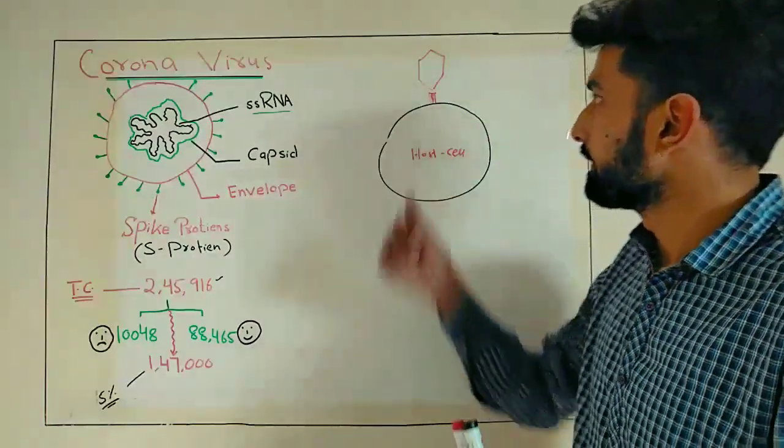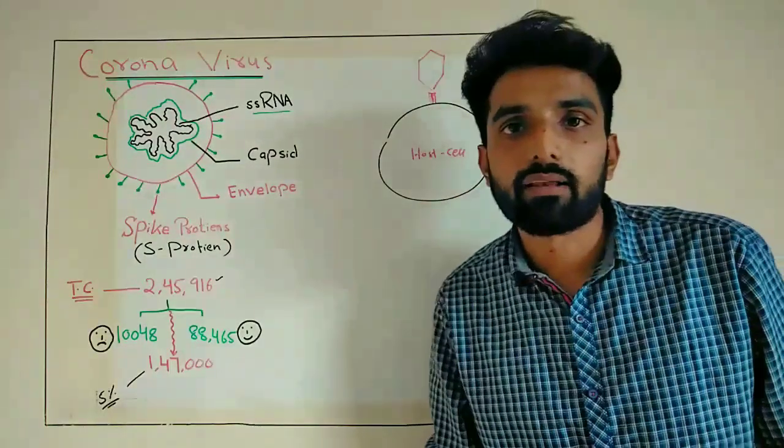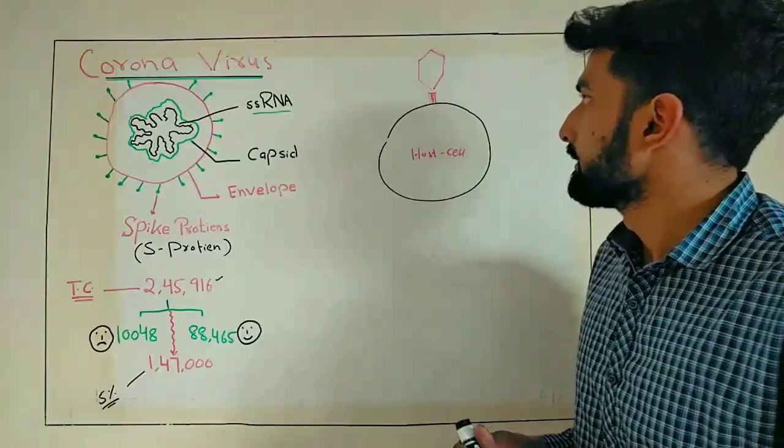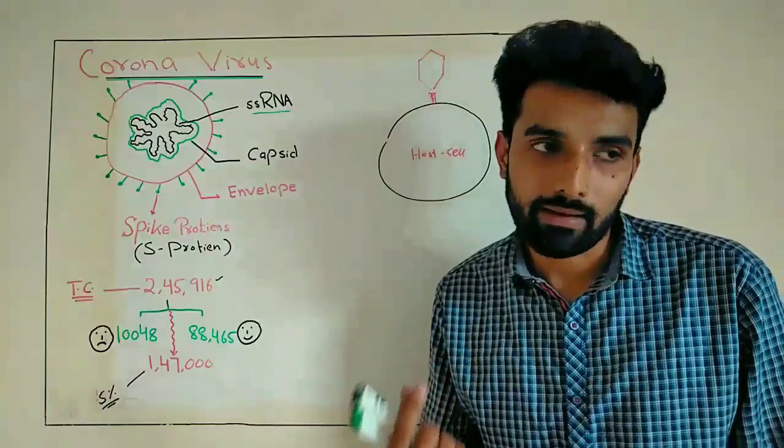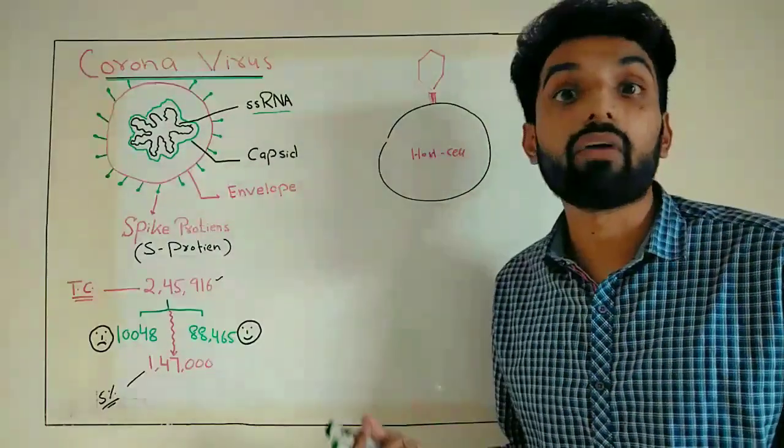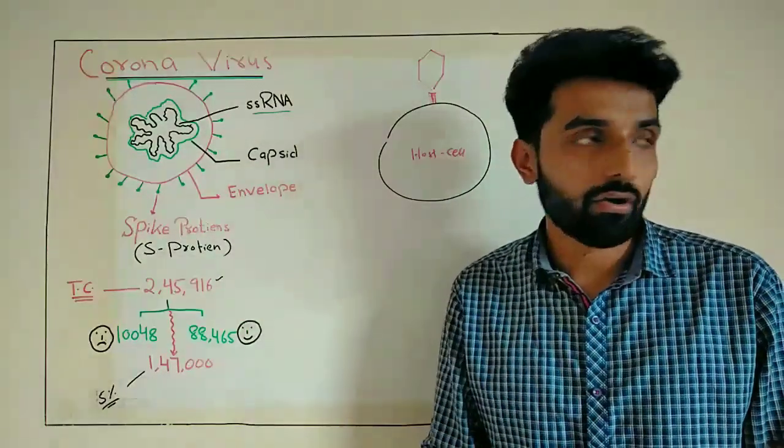But unfortunately, these receptors are used by some viruses to get into our cell. For example, the nicotinic receptor of acetylcholine is used by rabies virus for penetration into our cell.